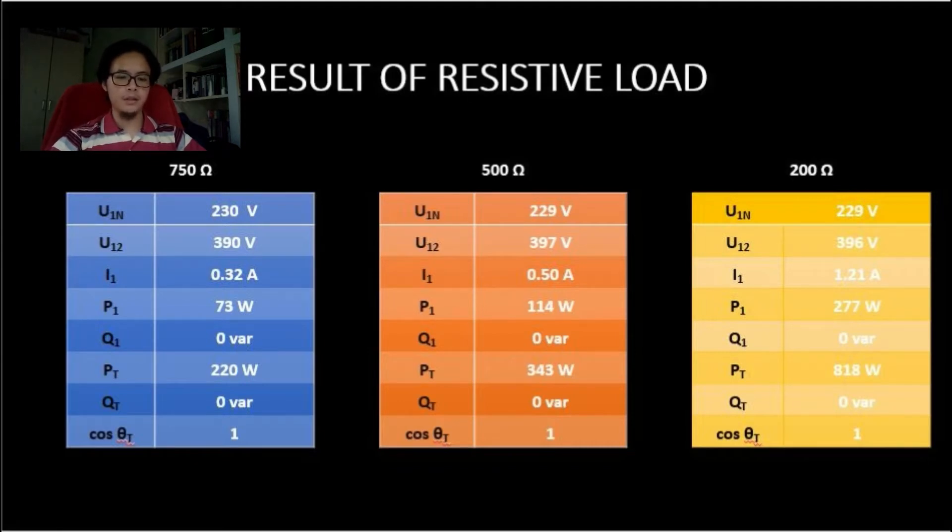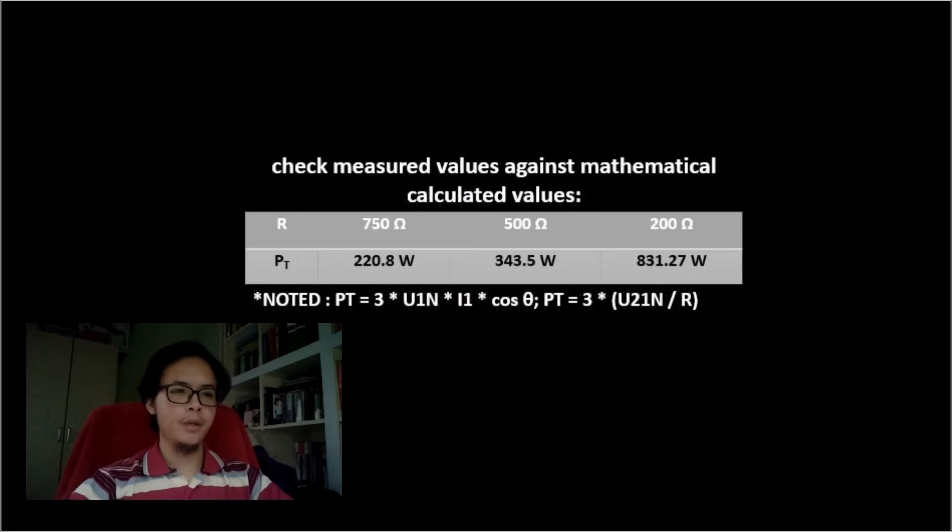500 and 200 are constant. For the current it is increased from 0.32 ampere, 0.5 ampere and 1.21 ampere.